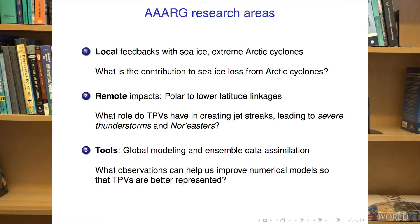Three areas that I look at are some of the local things happening in the Arctic, like feedbacks with the atmosphere and sea ice, and extreme Arctic cyclones. One question I like to address is the contribution of sea ice loss from Arctic cyclones. Another area of research involves the remote impacts — ultimately we want to improve weather prediction down here, so the origin of these cold air masses is up in the Arctic, and I like to understand where that air is originating from.